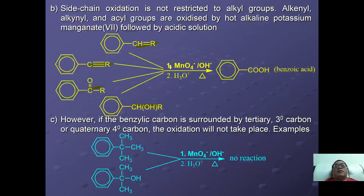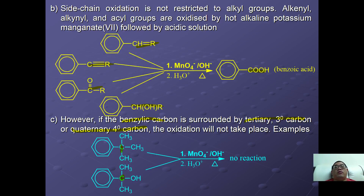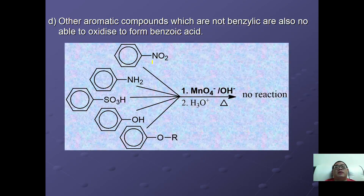Regardless of whether the side chain contains an alkene, alkyne, ketone, or alcohol, all of them can be oxidized to become benzoic acid. However, if the benzylic carbon is a tertiary or quaternary carbon with no benzylic hydrogen, oxidation cannot take place and no reaction occurs. Similarly, other aromatic compounds that are not benzylic — such as nitrobenzene, aniline, benzenesulfonic acid, phenol, and ethers — cannot undergo oxidation to form benzoic acid.